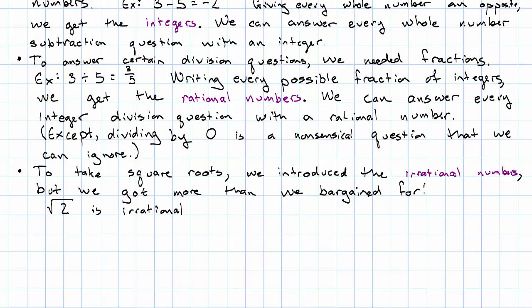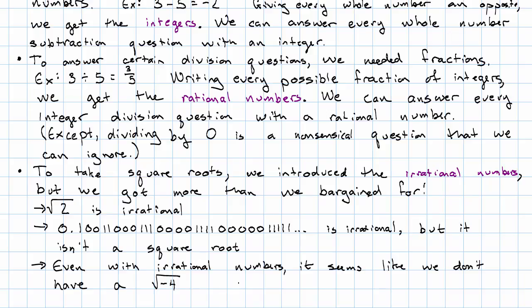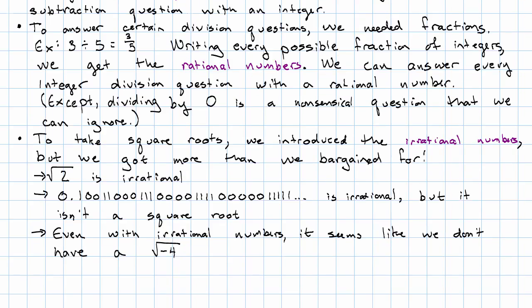Sure, square root of 2 is an irrational number. But so is this number with the pattern of zeros and ones after the decimal point. This number is an irrational number, but it's not a square root. And now it seems like, even with the irrational numbers thrown in, it seems like we still don't have a square root of negative 4.